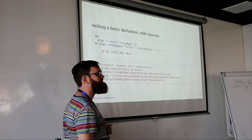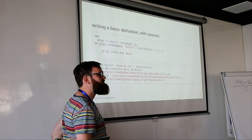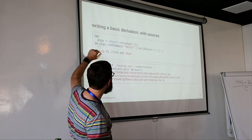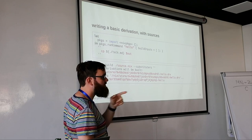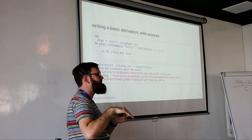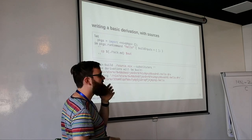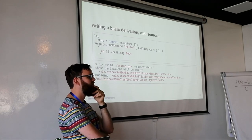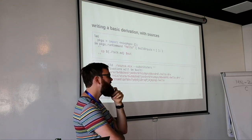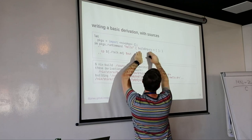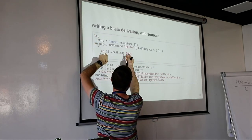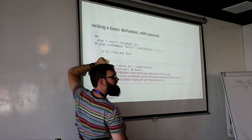Q: If you change whitespace in the Nix expression, would the derivation still have the same hash? If you change whitespace up in the let bindings, it won't make a difference. But if you change anything inside the build command string — like adding spaces there — then that will change the hash.